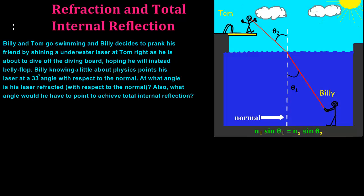In this problem, Billy and Tom decide to hit up the local swimming pool. Billy, knowing that Tom is somewhat of a ladies man, decides to bring an underwater laser pointer just in case his buddy tries to show off his fancy diving moves to impress the ladies.